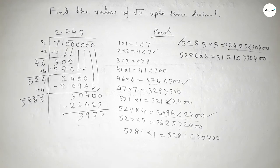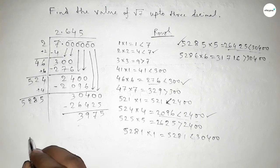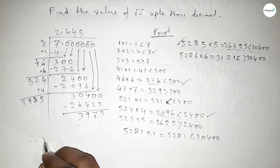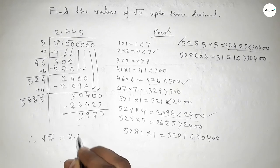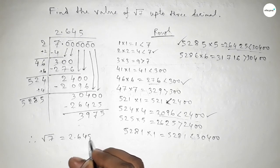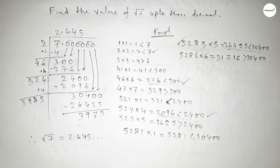We could continue to find more decimal places, but we need root 7 up to 3 decimal places. Therefore, root 7 is equal to 2.645. That's all — thanks for watching. If this video is helpful to you, please share it with your friends.